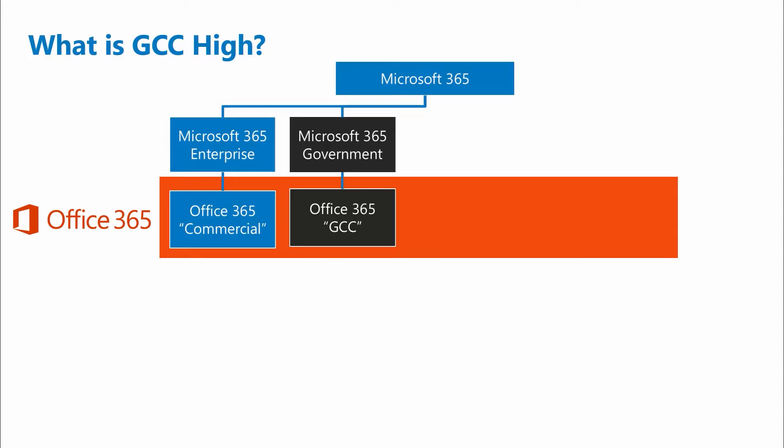For many government standards, you must also make sure that anyone working in the environment meets specific background checks. So there's GCC, the Government Community Cloud. Don't confuse GCC with GCC High. GCC is a data enclave of commercial, and while it does provide data residency controls, it has the same global directory and network as commercial and therefore cannot provide the data sovereignty required by ITAR.